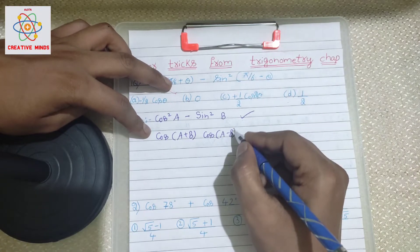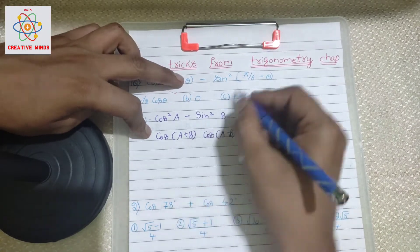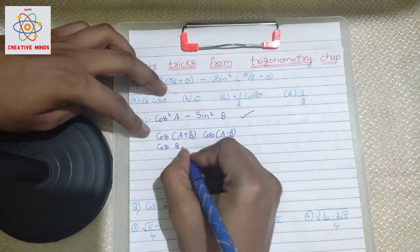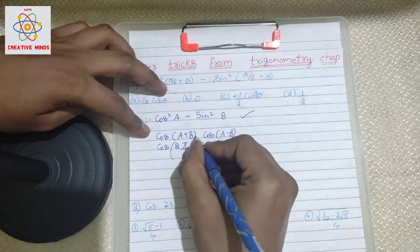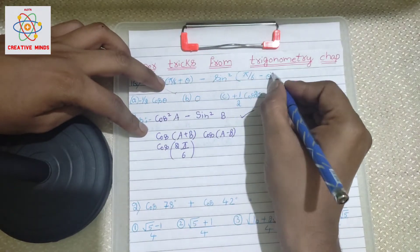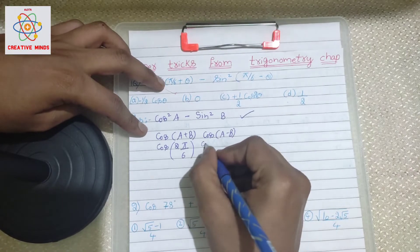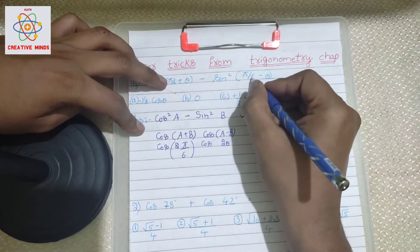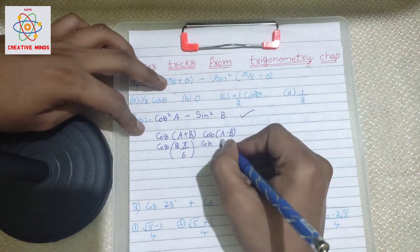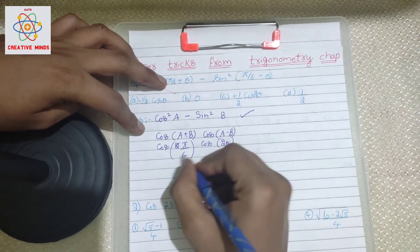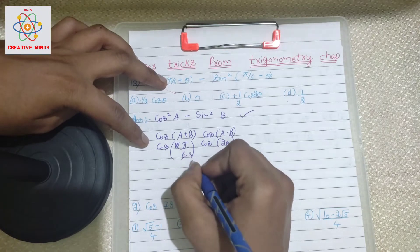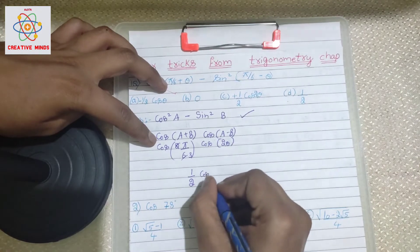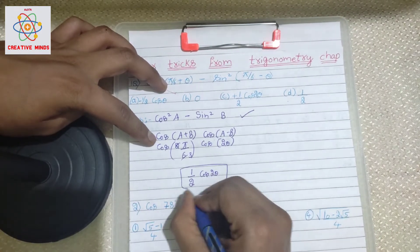This is the trick: a plus b gives (π/6 + θ) + (π/6 - θ). The θ terms cancel, leaving 2π/6. Then a minus b gives 2θ, since the π/6 terms cancel. So we get cos(2π/6)·cos(2θ), which simplifies to cos(π/3)·cos(2θ). Since cos(π/3) = 1/2, the answer is (1/2)cos(2θ).